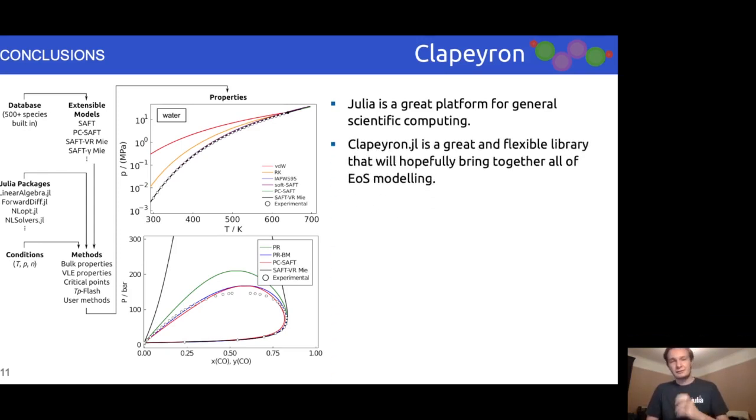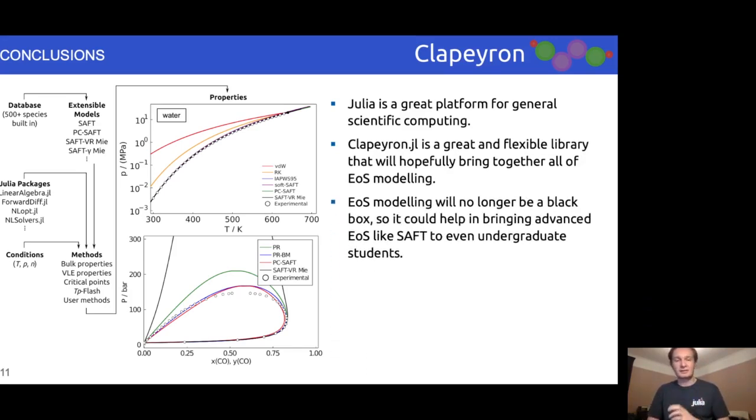Clapeyron is a great and flexible library that brings together more equations of state than any other existing package. Equation of state modeling is no longer a black box, which may allow equations of state such as SAFT to become more accessible to a wider audience, such as undergraduate students.